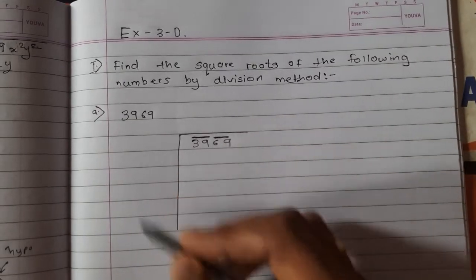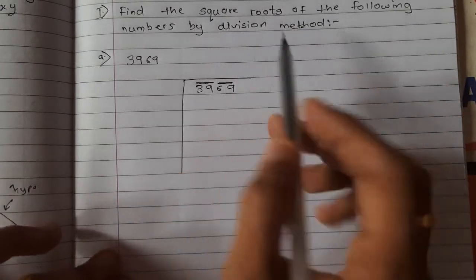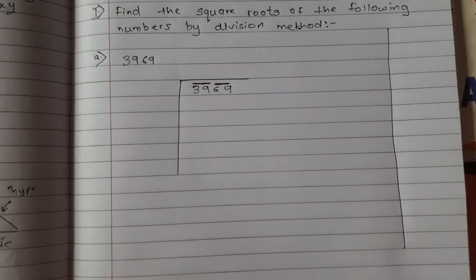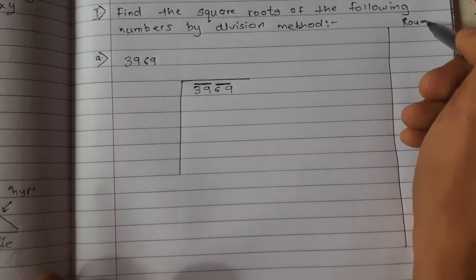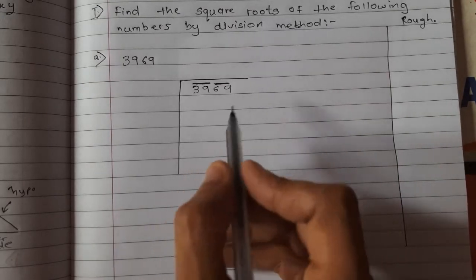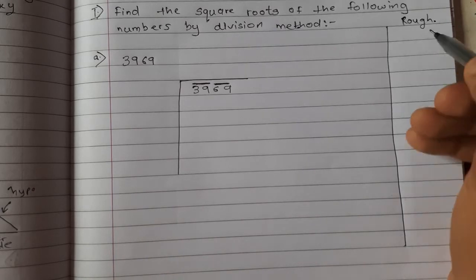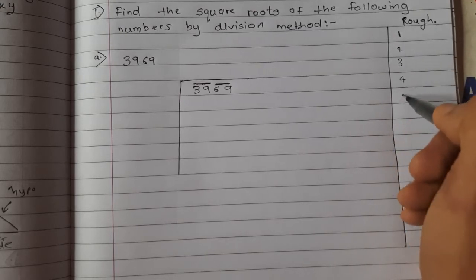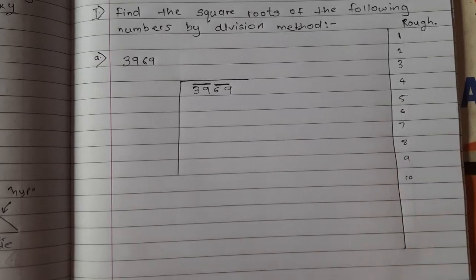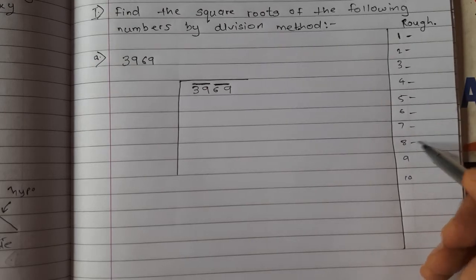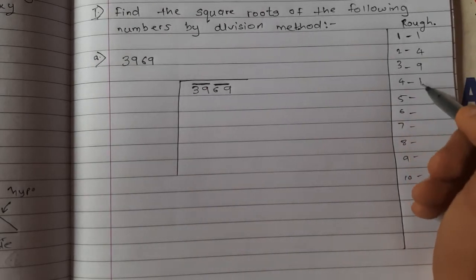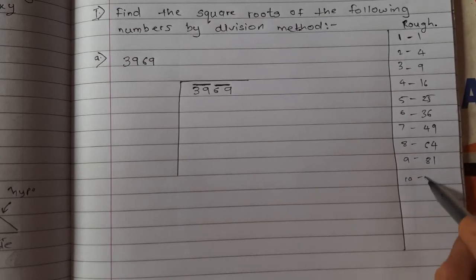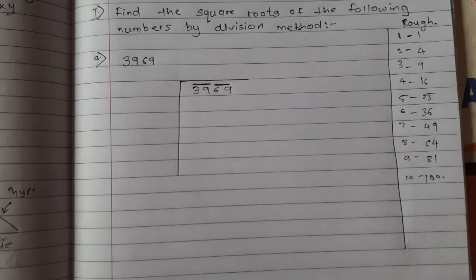When you are finding square roots by division method, you have to make a rough column — it is very essential. So we will always make one rough column here and write 'rough' for the rough work. First, you should know the squares of numbers from 1 to 10, and here we will write a group of two numbers.